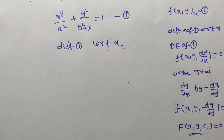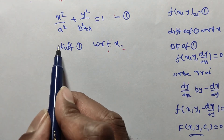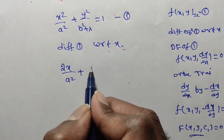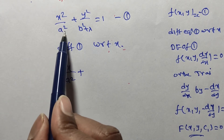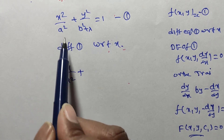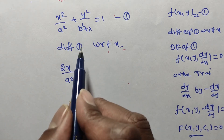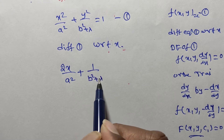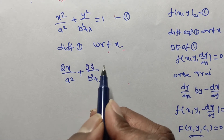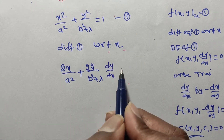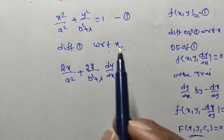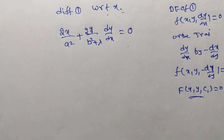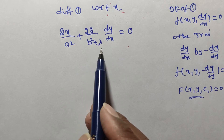We must eliminate the parameter. Differentiating equation 1 with respect to x: 1/a² is a constant, so the derivative of x² is 2x. Similarly, 1/(b² + λ) is a constant, so the derivative of y² gives 2y · dy/dx. The right-hand side is 1, a constant, so its derivative is 0.